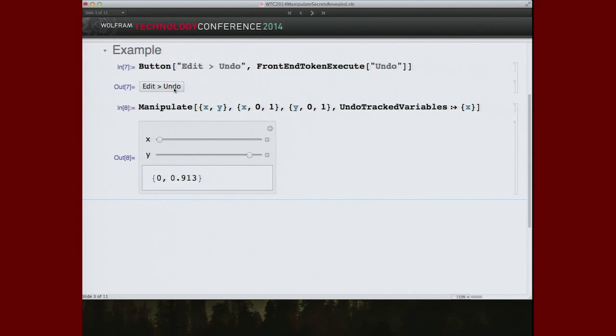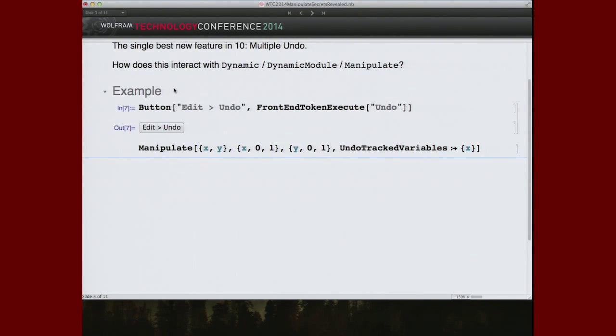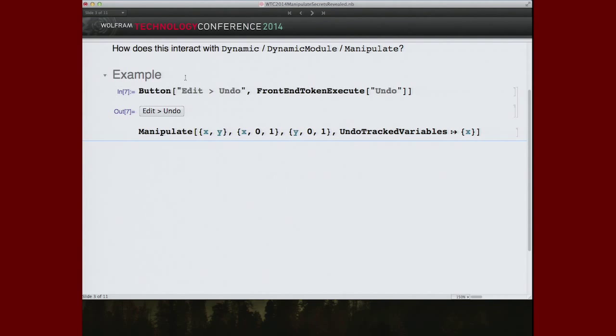Any guesses what happens if we undo one more time? Well, before x existed, there was no output here, right? So this is seamlessly in the undo chain for the notebook. It's not somehow separate in this manipulate. It's throughout the undo mechanism. This is very deep technology. Right, so we have undo track variables.